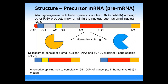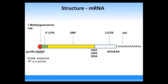How a pre-mRNA is spliced depends on which tissue or cell type it is in. In a different tissue, you may have different splicing and thus a different protein. This is called alternative splicing, and it is key to the complexity of organisms. For example, 95 to 100% of transcripts in humans may undergo alternative splicing, whereas only 65% in the mouse. It is not so much a difference in the number of genes but a significant difference in how genes are processed.